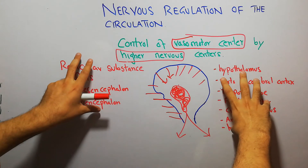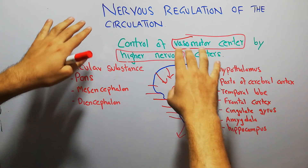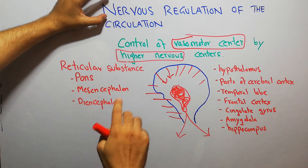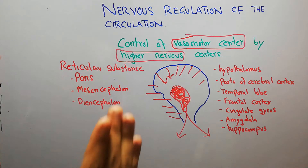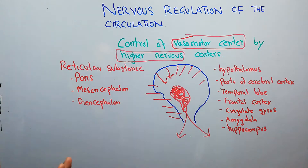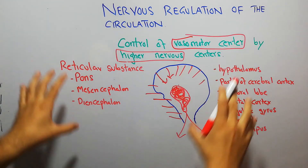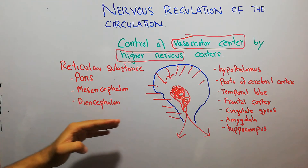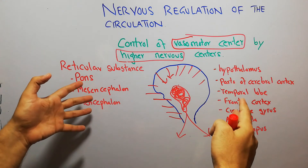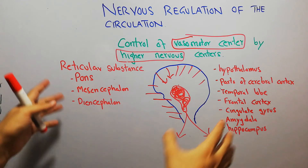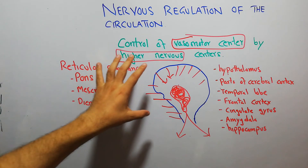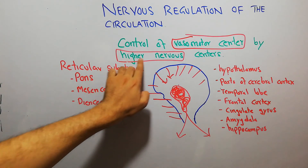All of these areas are part of the brain, and the brain and spinal cord are an important part of the nervous system. This shows the involvement of the nervous system — specifically the pons, mesencephalon, diencephalon, hypothalamus, temporal lobe, frontal cortex, amygdala, and hippocampus — in controlling the vasomotor center and thereby regulating the circulation. That's all about the control of vasomotor center by higher nervous centers of the brain.